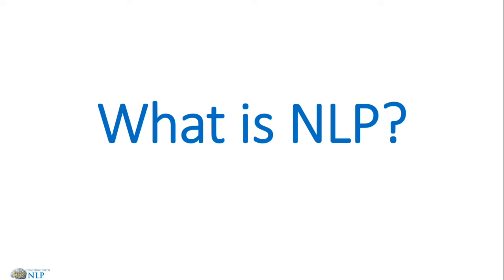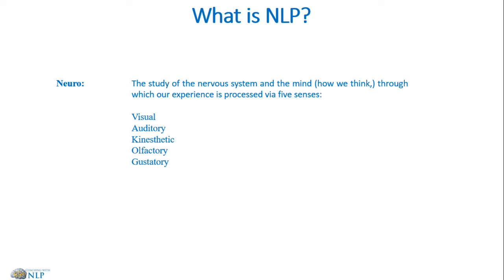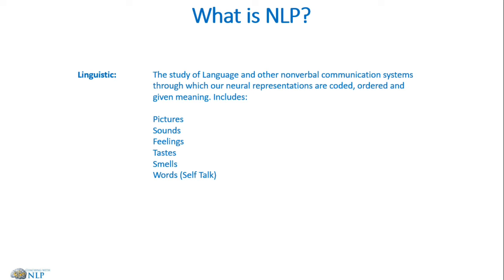So now let's look at what NLP is — what's the definition of NLP. Well, NLP stands for neuro-linguistic programming. Neuro is the study of the nervous system and the mind — how we think, through which our experiences are processed by our five senses: visual, auditory, kinesthetic (which is feeling), olfactory (which is smell), and gustatory (which is taste). All of our experiences actually happen inside of our own neurology, even a shared experience with somebody else still happens inside of our own neurology.